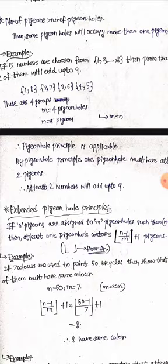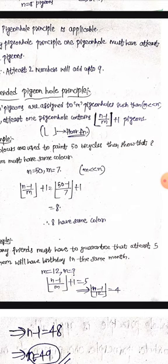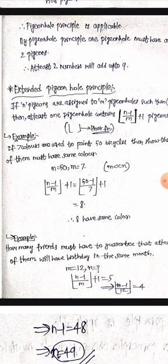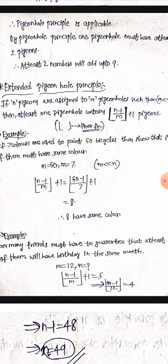Next, the extended version of this principle is Extended Pigeon Hole Principle. See this one. If n pigeons are assigned to m pigeon holes such that m is much smaller than n—that means in the normal principle, m and n are close to each other, but in this case, m is very much smaller than n comparatively—then we need to apply Extended Pigeon Hole Principle. Here, if n pigeons are assigned to m pigeon holes such that m is very smaller than n, then at least 1 pigeon hole contains—this is the floor function.